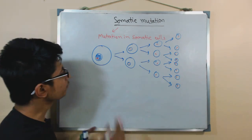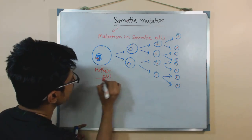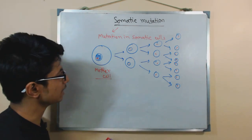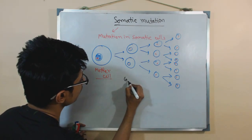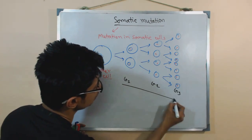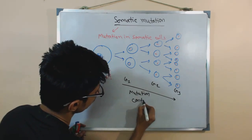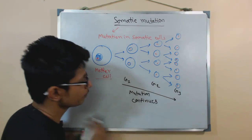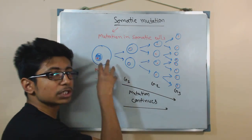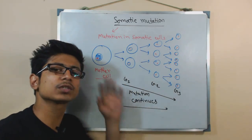If mutation originated in the mother cell, that mutation will be carried to the next generation of cells. These are the next generation: generation 1, 2, 3, and the mutation continues through this level. Because if there is any mutation in the first kind of cell, after the cell division, the mutation will remain there.